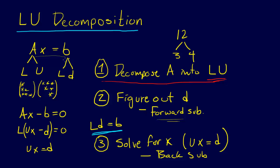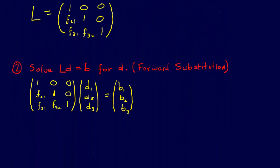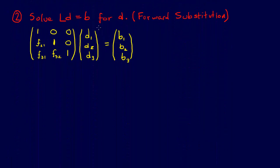That is called forward substitution, and again here we see that LD equals B. So we can go down and do that here. Solve LD equals B for D.